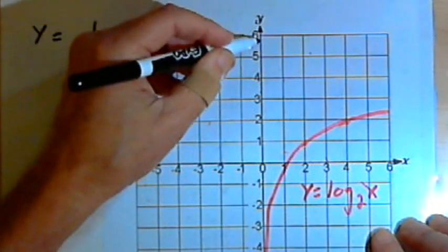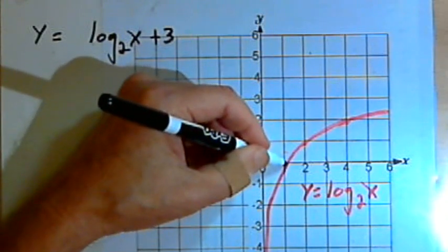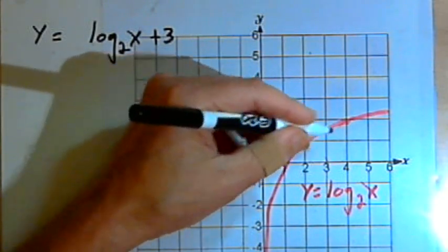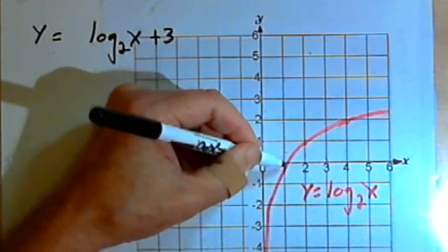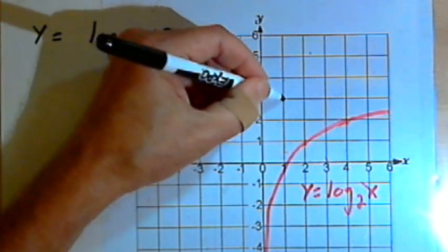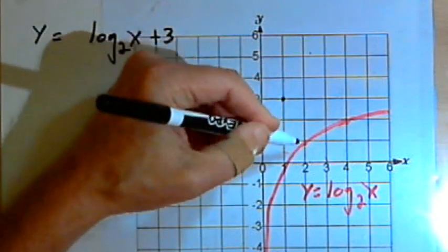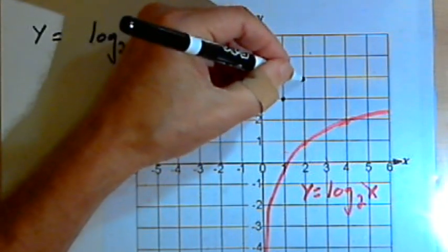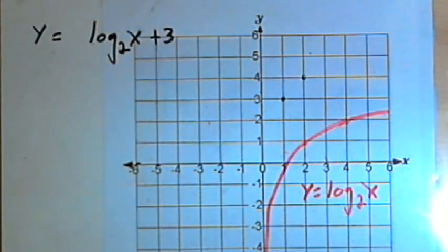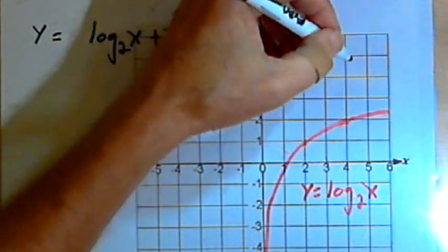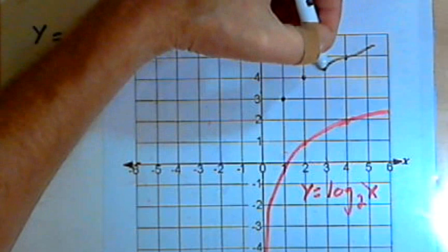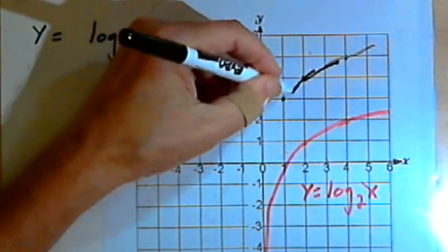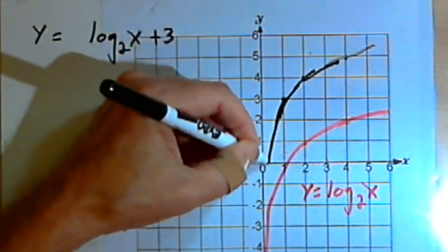So in this case I'm going to raise the graph up by 3 units. The vertical asymptote will remain the same, I'm just going to add 3 to each of the y-coordinates for any points that I have. So I can take the point (1,0), make that (1,3). Take the point (2,1), and make that (2,4). And (4,2) would be (4,5). And then I could draw a rough curve in to sketch what that's going to look like.